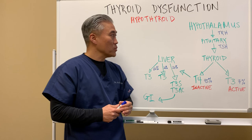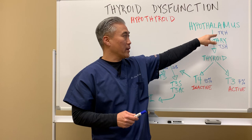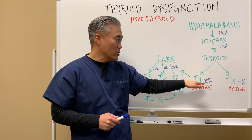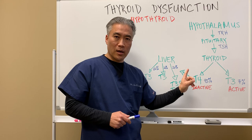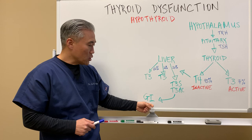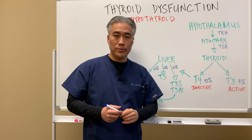To review: the hypothalamus releases TRH, which goes to the pituitary and triggers the release of thyroid stimulating hormone — the hormone most doctors check. The thyroid then releases T4 and T3. T4, which medical doctors also typically check, is inactive and gets converted to active T3 in the liver and partially in the GI tract.